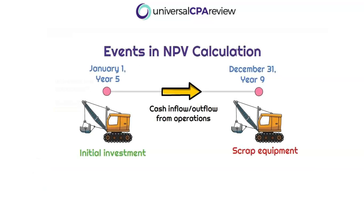There are three main events relevant to this net present value calculation. Starting at the beginning, on January 1st of year five, they purchase the equipment — an initial investment of $25,000. Once they have the equipment, they can generate revenue and income from operations, so we'll have cash inflows or outflows from operating. Then at the end, five years later on December 31st of year nine, the useful life is up and they scrap the equipment. We need to find the present value of all these different inflows and outflows.